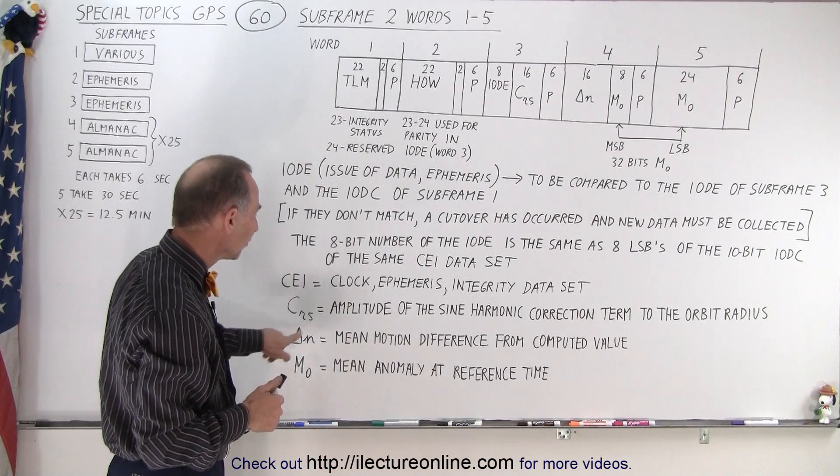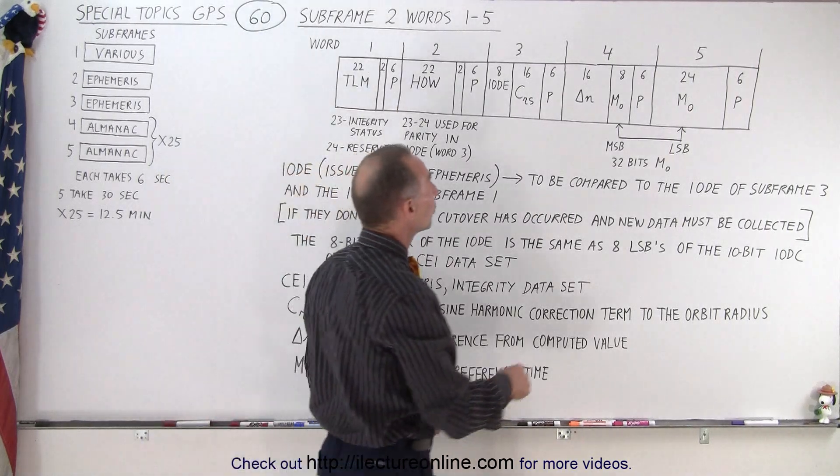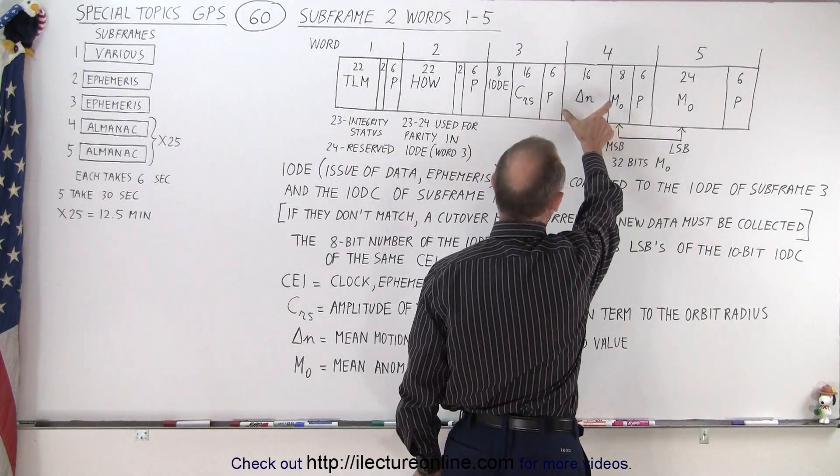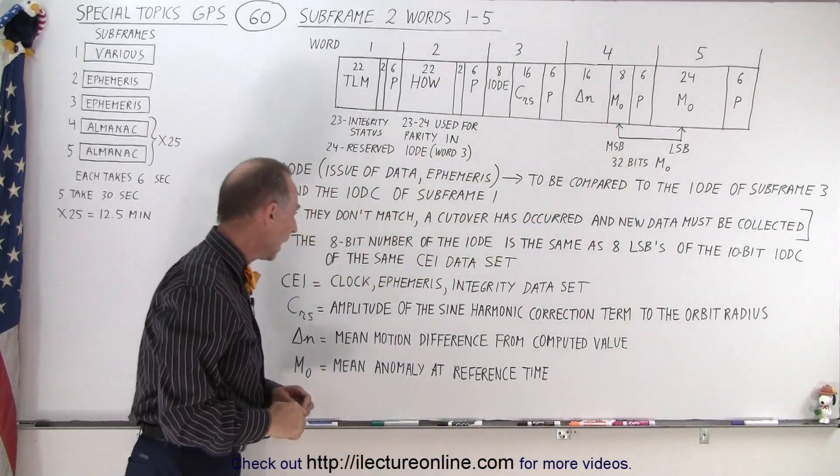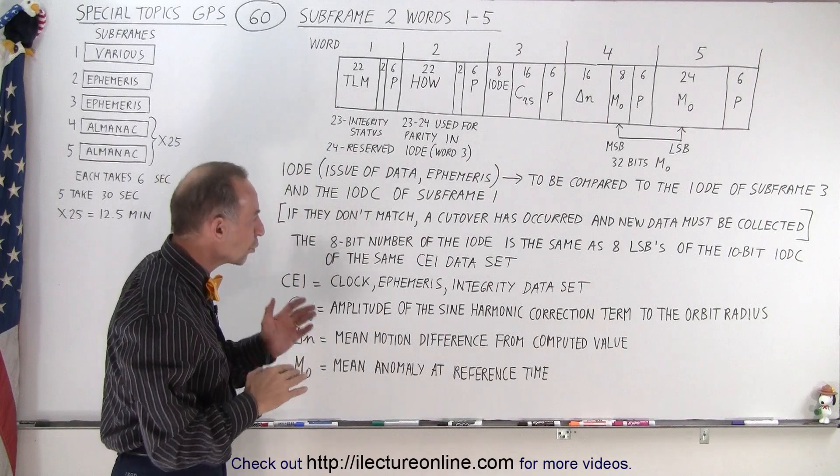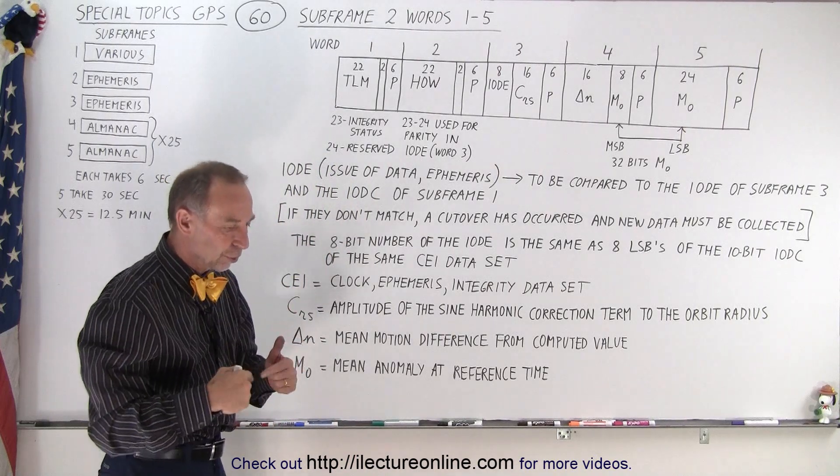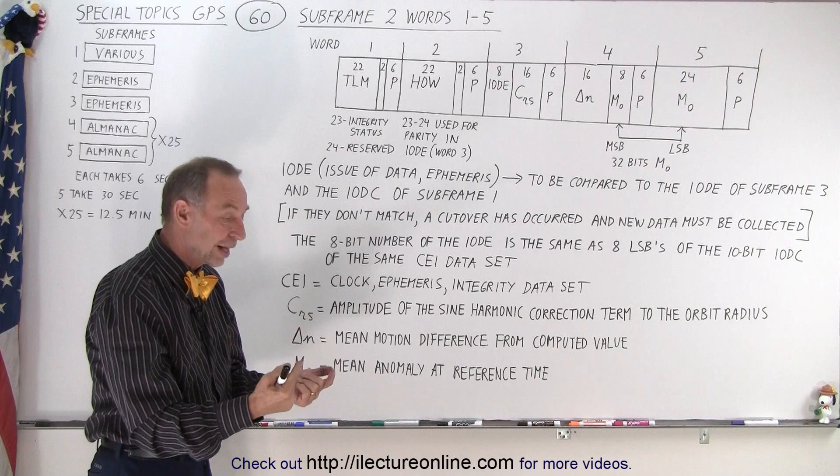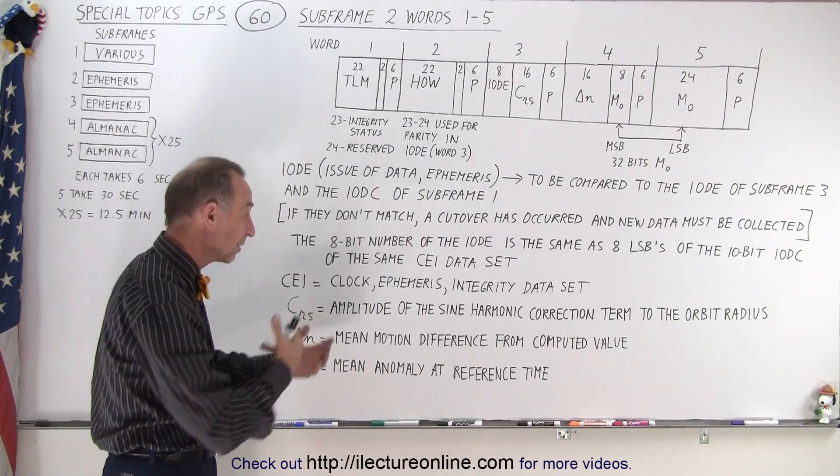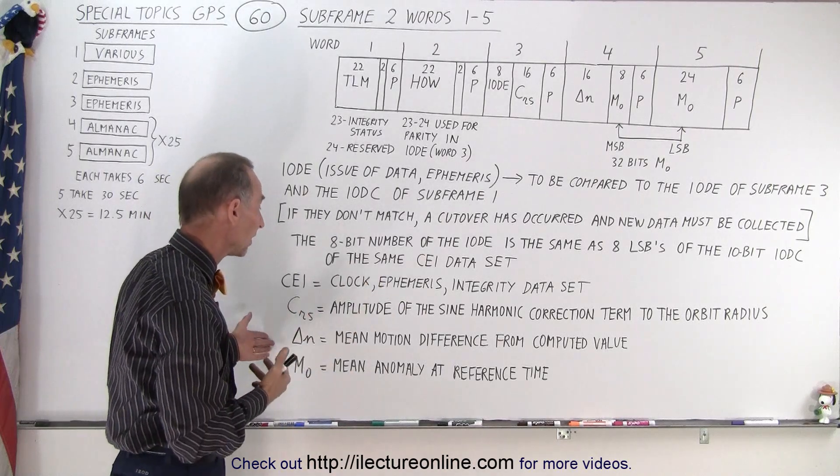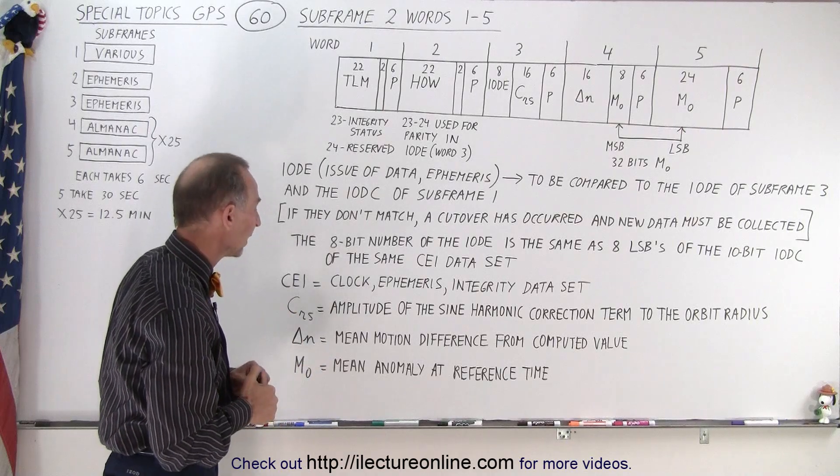The delta N is the mean motion difference from the computed value. So that's right here, that's these 16 bits in word 4. The motion difference from the computed value, so we'll have a predicted computed value, and then we'll have a measured value based on the data that we get from the satellite. And so we can compare the two and adjust for that.